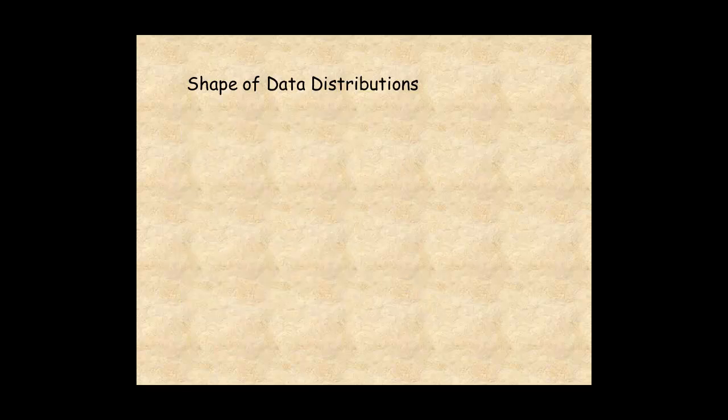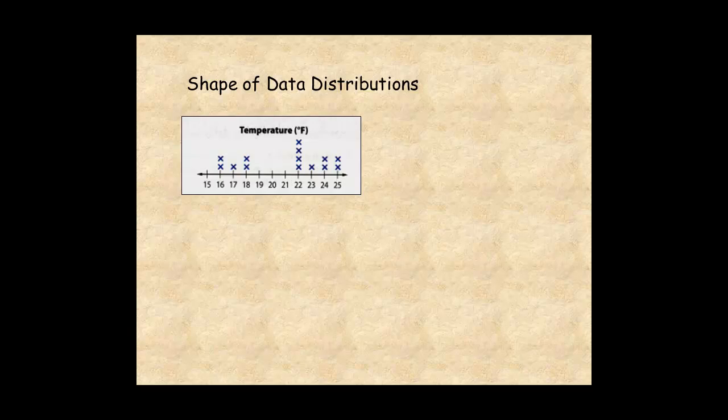For this dataset, the shape of the distribution is not symmetric. There's a gap from 19 to 21. There are clusters from 16 to 18.